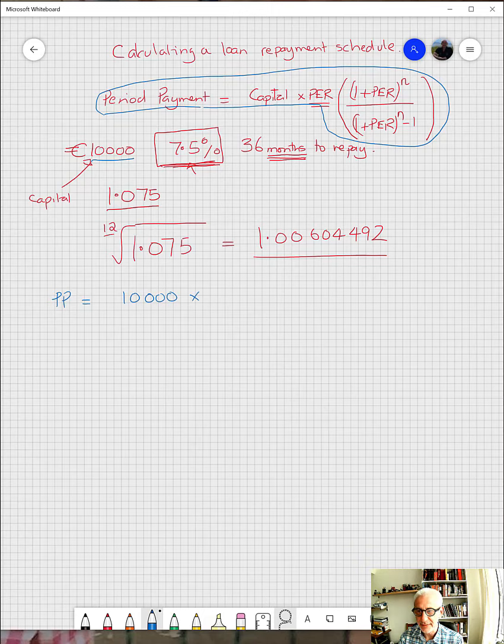Multiplied by the PER, the period equivalent rate. So that's going to be a figure of, well, the equivalent rate in this case is 0.00604492. So that's the effective rate that you're going to multiply things by each month, and it's just this number here with the one knocked off the front.